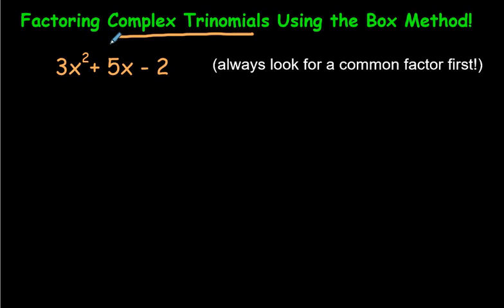This being a, the 5 being b, and the negative 2 being the c part. If you see a number up here, it means you have to factor things a little bit differently.